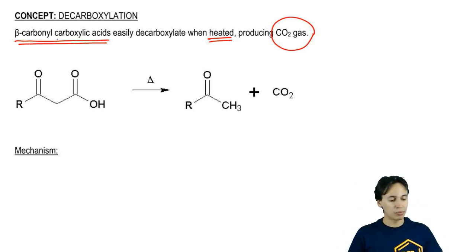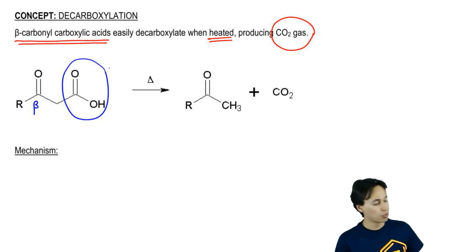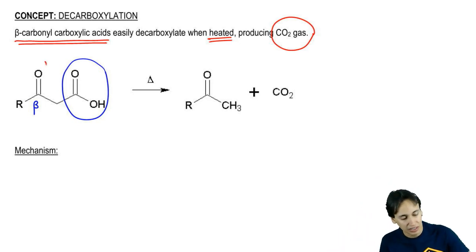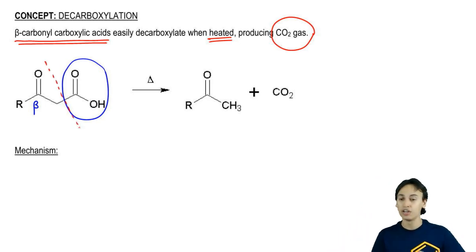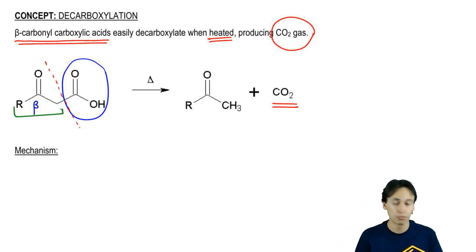What a beta carbonyl carboxylic acid is, it's just that you have some kind of carbonyl beta to your carboxylic acid. When you heat that up, what's going to happen is that you literally cleave the entire carboxylic acid off and it becomes CO2 gas, leaving only the carbonyl portion behind.